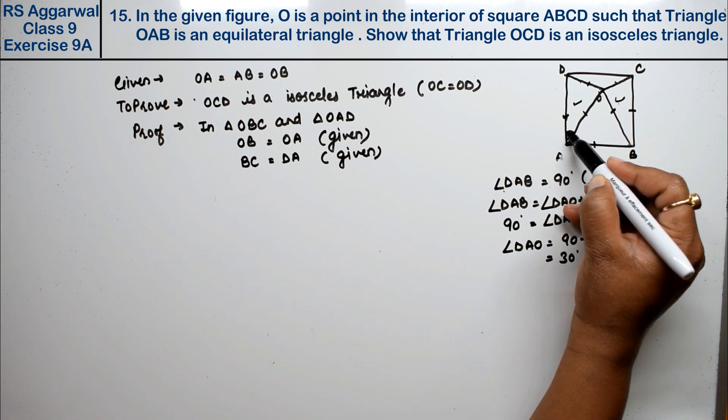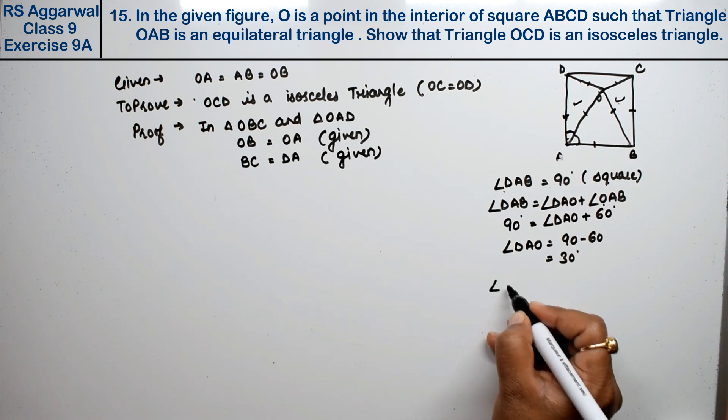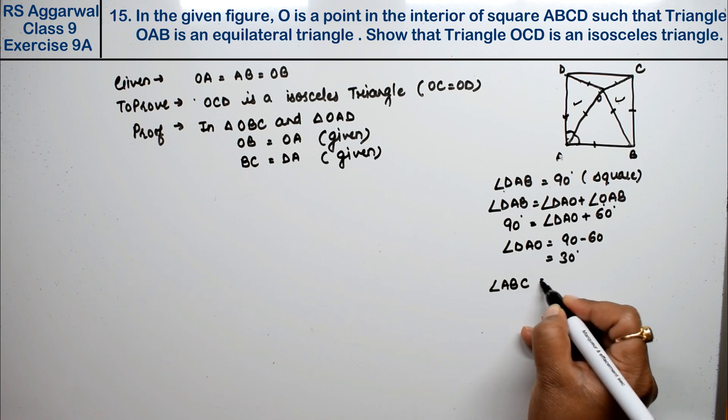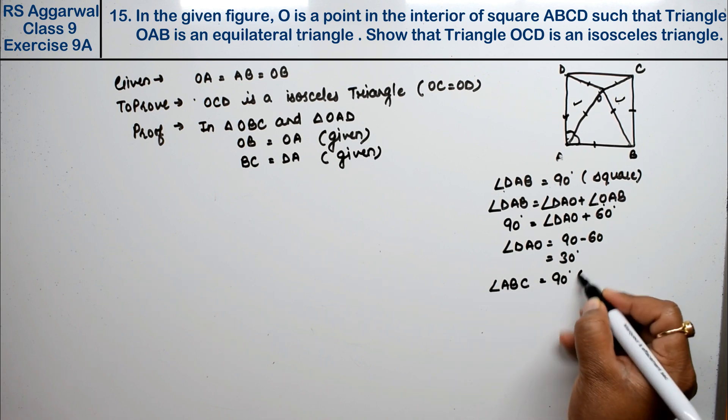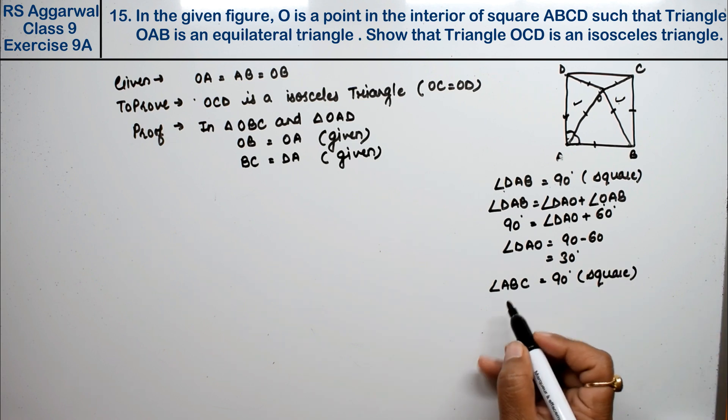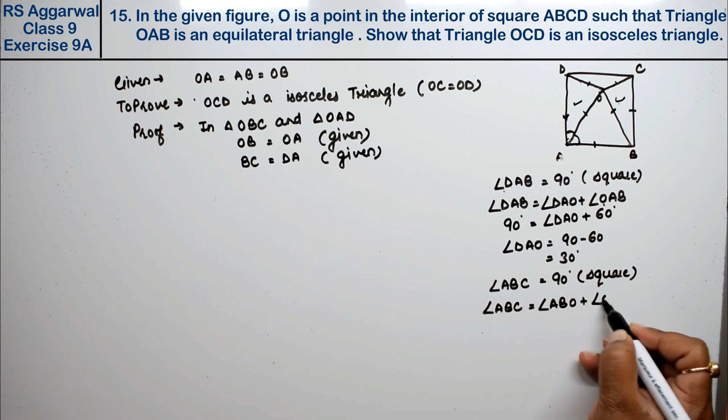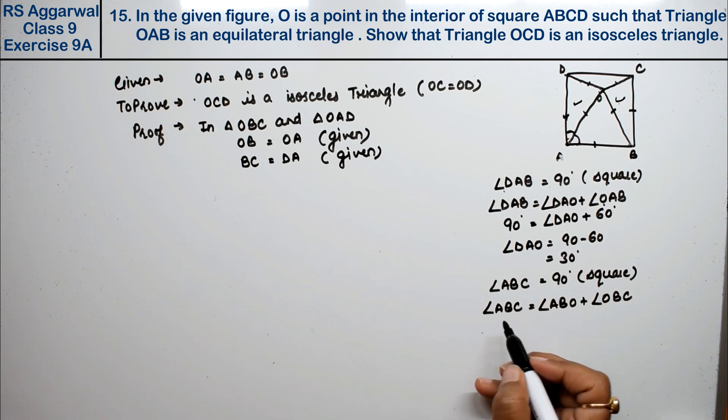The same case applies here. Angle ABC is 90 degrees because it's a square. ABC can be written as angle ABO plus angle OBC.